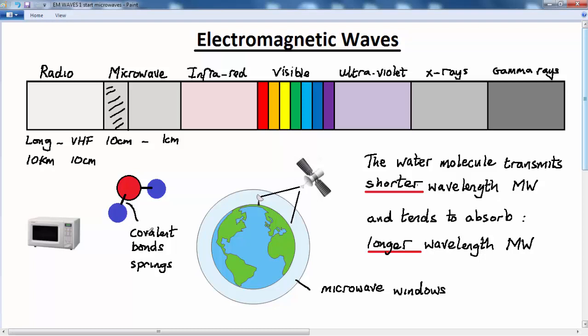So what's happening is that energy from the microwaves is being transferred to the vibrations of the water molecule, causing them to vibrate with a greater amplitude, and causing the temperature of the water to increase rapidly. So this phenomenon can be used in a microwave oven.